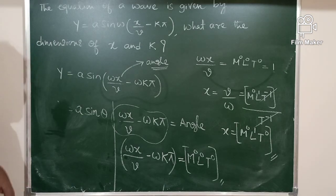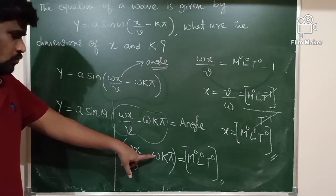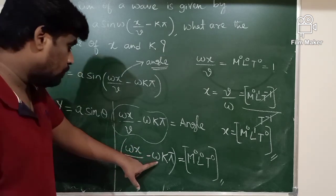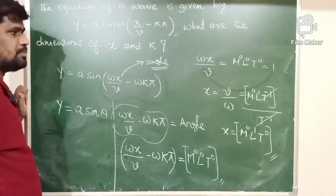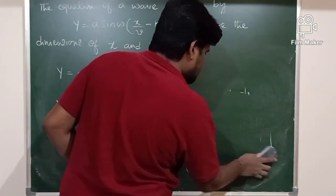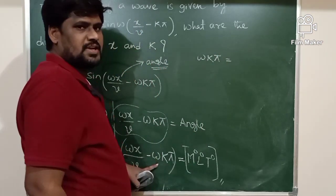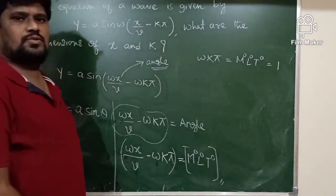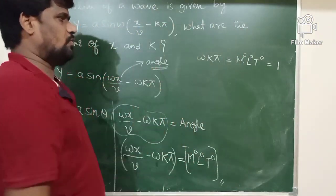Next, I want to find the dimensional formula of K. Since ωK·π is also dimensionless — equal to M⁰L⁰T⁰, which equals 1 — I can solve for K.